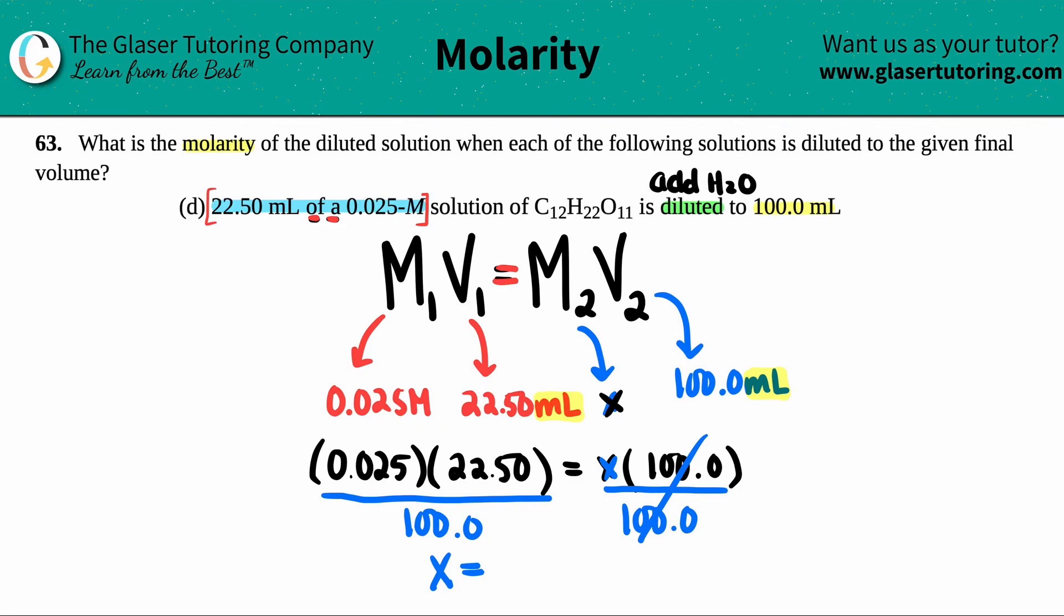Let's do the math. This cancels out. X equals, let's see, 0.025 times 22.50, then take that and divide by 100. A small molarity, but that's okay. Looks like the lowest number of sig figs is two sig figs, so my answer can only have two sig figs. So 0.0056.